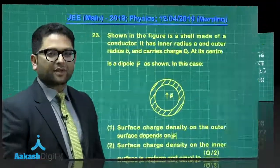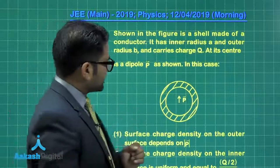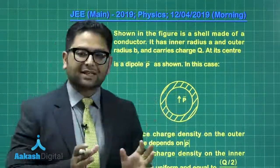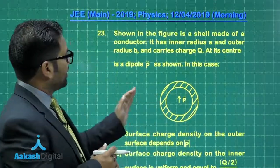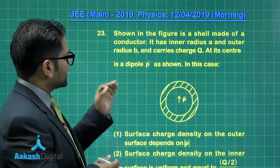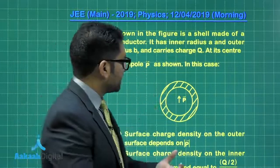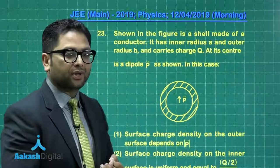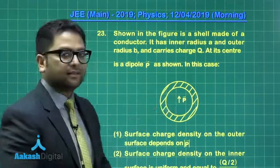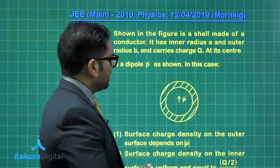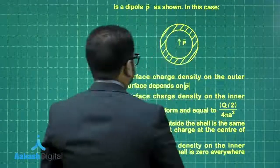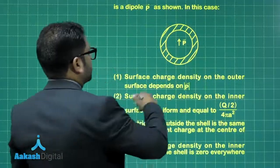Moving to the next question from electrostatics — a nice property of conductors is used here. A shell made of a conductor has inner radius A and outer radius B, and carries a charge Q. Additionally, a dipole is placed at the center. We need to determine the charge distribution.